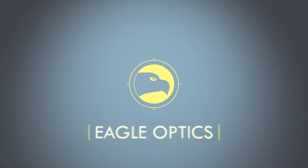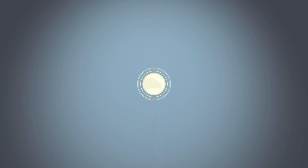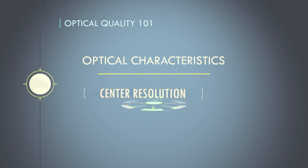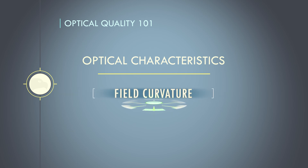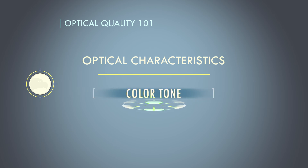Hi everyone, welcome to Optical Quality 101. The quality of a binocular or scope will have a direct impact on many optical characteristics, including center resolution, edge sharpness, field curvature, chromatic aberration, brightness and contrast, and color tone. Let's take a look at how these things affect what you see.